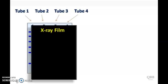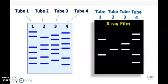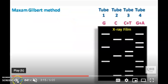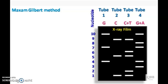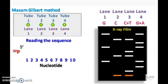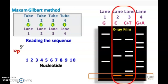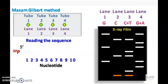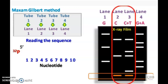Electrophoresis is carried out for each tube side by side. Now as the smallest fragment is at the bottom of the gel, we read the gel from bottom. Lane 2 and 3 represent C and C plus T. Lane 2 and 3 have two bands, so the first nucleotide is C.